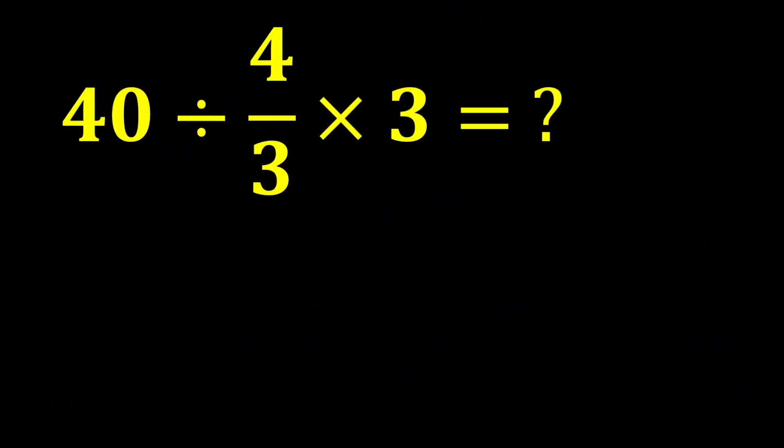40 divided by 4 over 3 multiplied by 3. In this expression, there is both division and multiplication, and since multiplication and division have equal priority, we must move from left to right and perform whichever operation we encounter first.